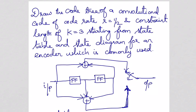Here, a 1 by 2 rate encoder means input 1 and output 2. Two adders are required, and since the constraint length is 3, you need 2 flip-flops. So 2 flip-flops are required. First we need to draw the encoder diagram, and in this question they have given that the encoder which is commonly used.